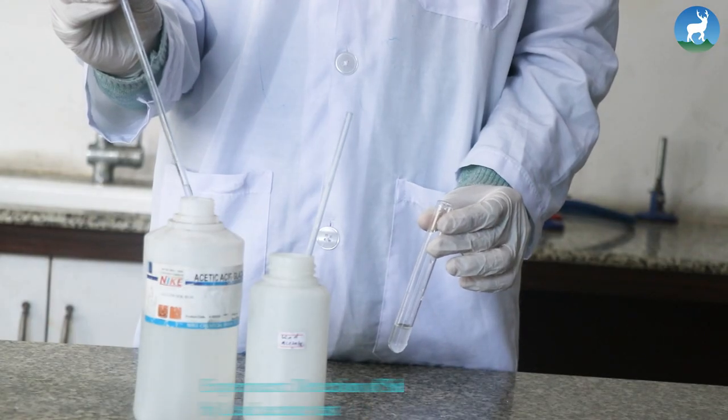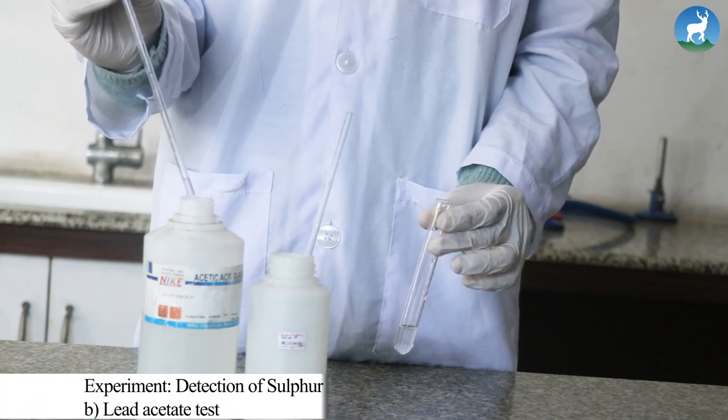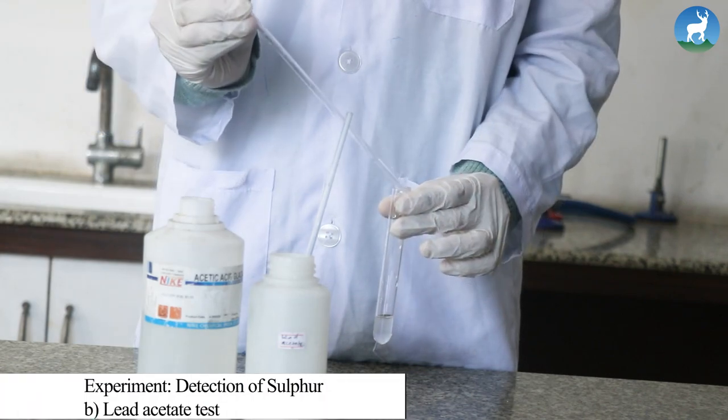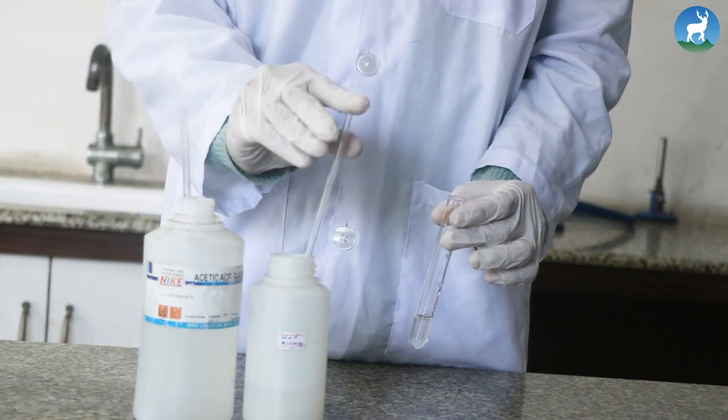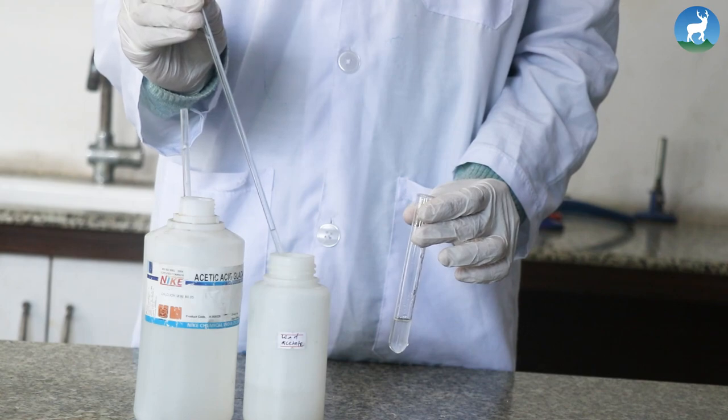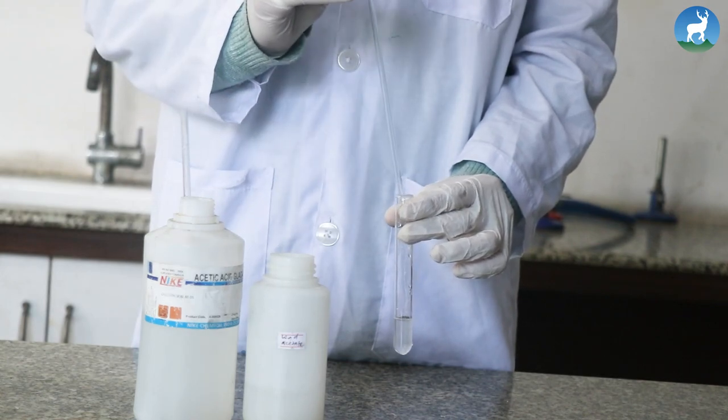The second test to detect sulfur is lead acetate test. First of all, add 1 ml of acetic acid into 1 ml of sodium extract. Then add 2 to 3 drops of lead acetate solution.